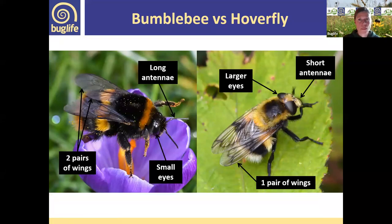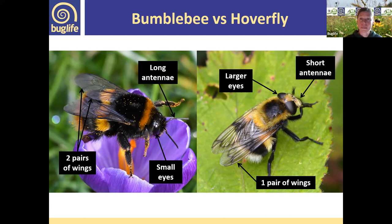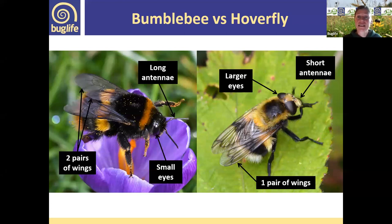How do we tell a bumblebee from a hoverfly that looks like one? We look at the number of wings — all bees have two pairs of wings, whereas hoverflies have one pair. We look at the antennae: bees have nice long antennae, whereas flies and hoverflies have short antennae. We also look at eye size: bees tend to have quite small eyes, whereas flies tend to have larger eyes.